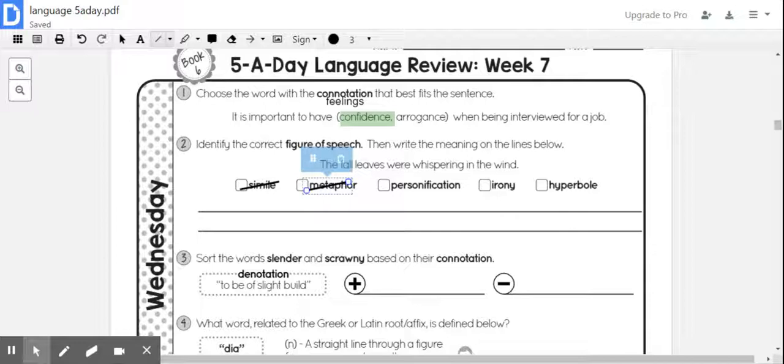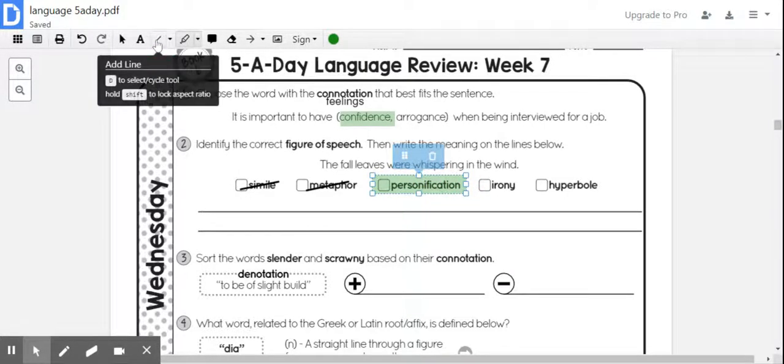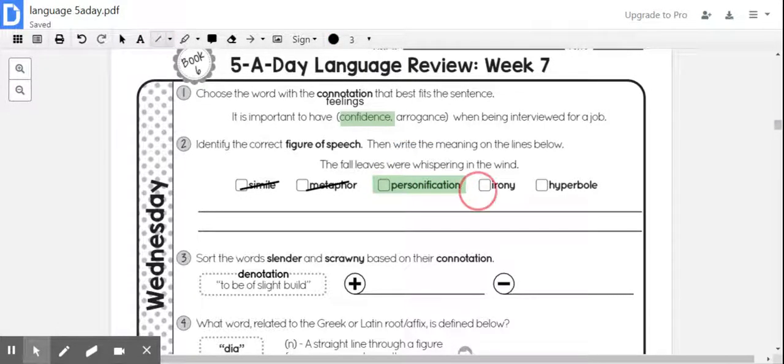Personification means that you're giving human-like characteristics to non-human objects. In this case, whispering. Leaves cannot whisper. So it would be personification, but let's go ahead and continue just to make sure. Irony would not be the case in this one. And then nothing is being exaggerated, so hyperbole would also not be your correct answer. So it is personification.